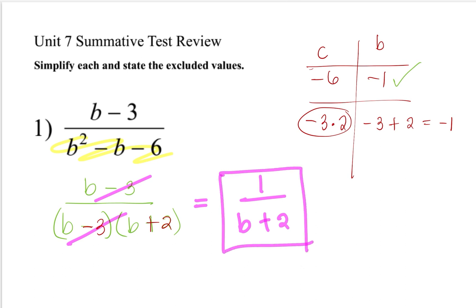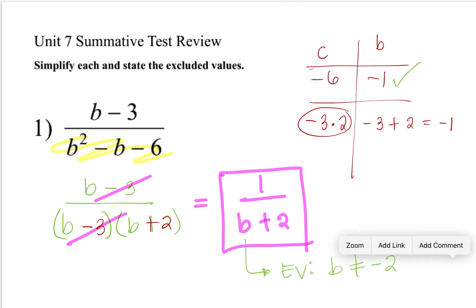Since our denominator has a variable, we are going to include the excluded value. The excluded value in this case is that B cannot be equal to negative 2. Why? Because if we substitute negative 2 for B, that will make the denominator equal to 0, which makes the whole rational expression undefined, or does not exist.